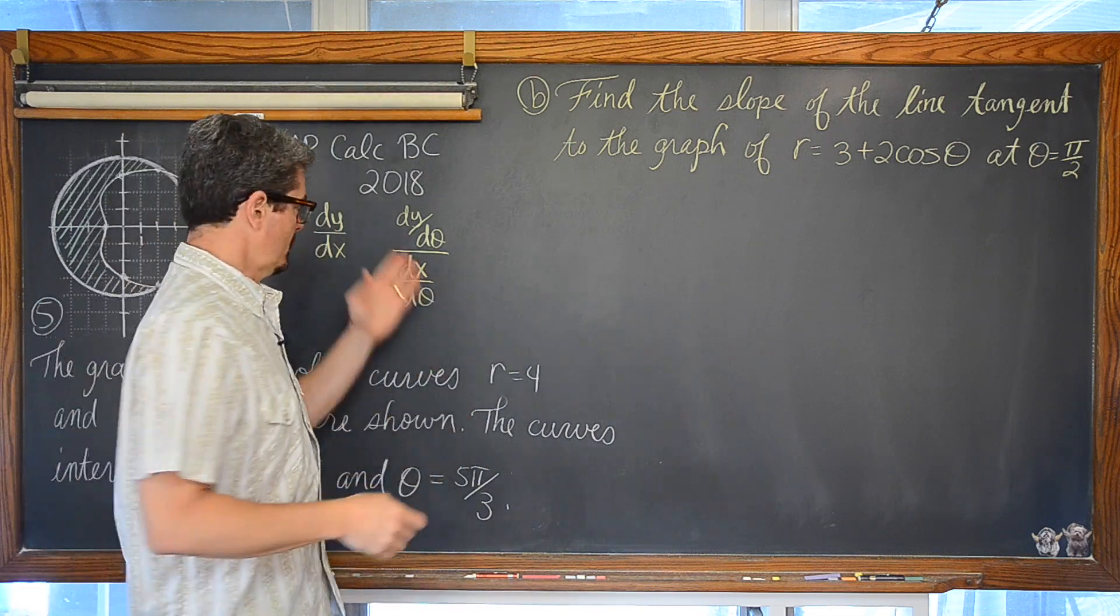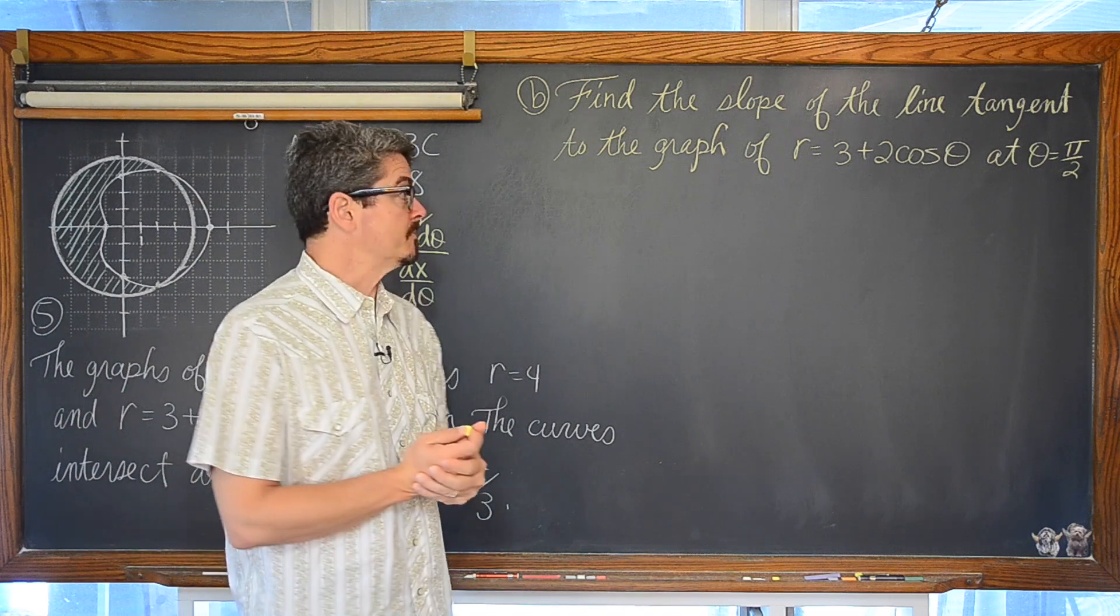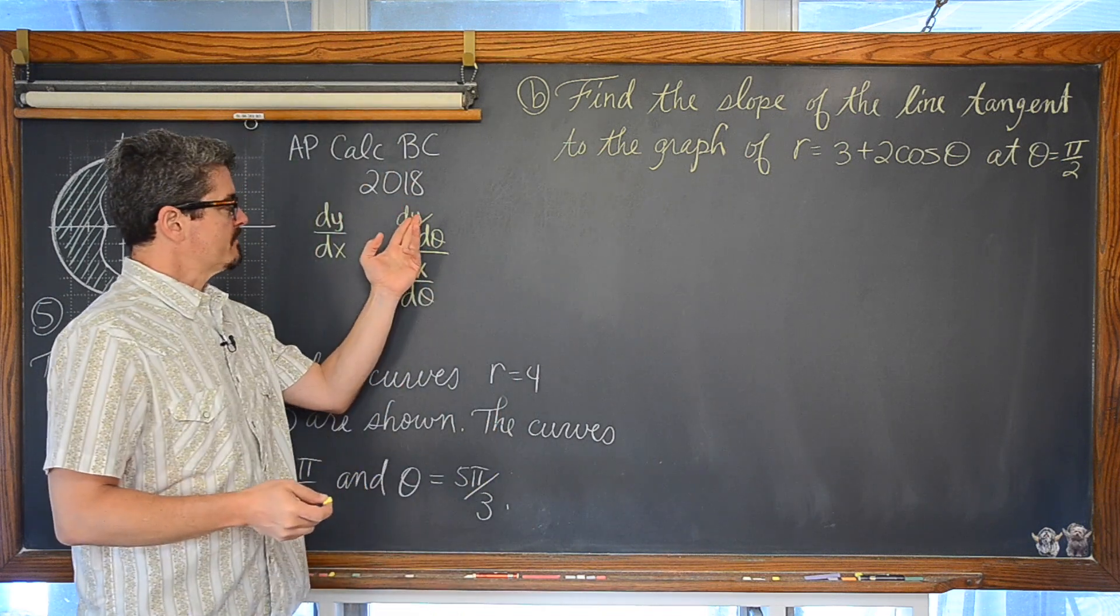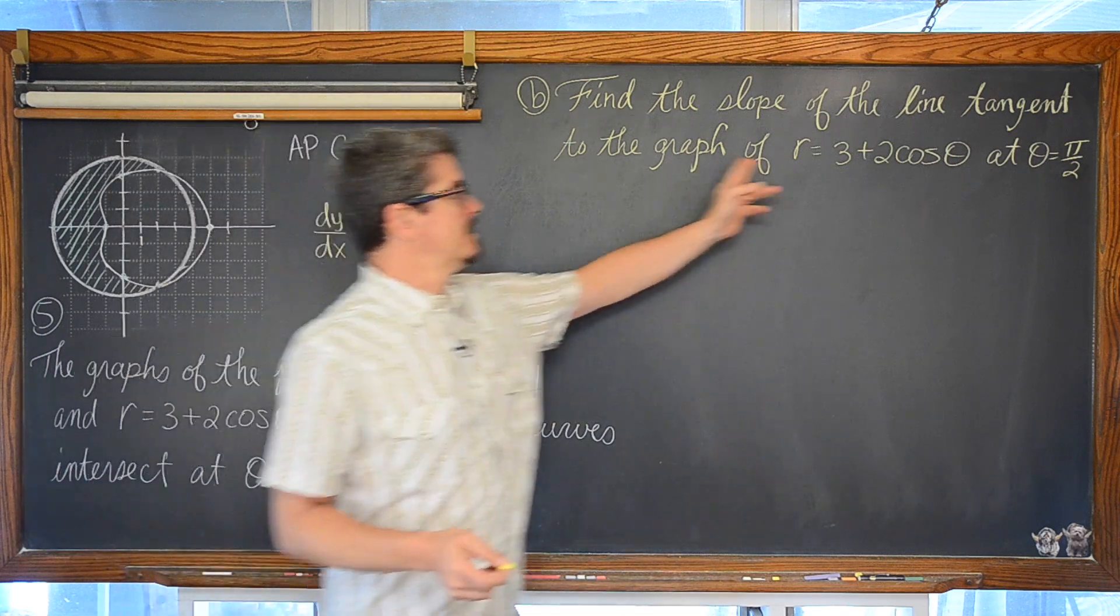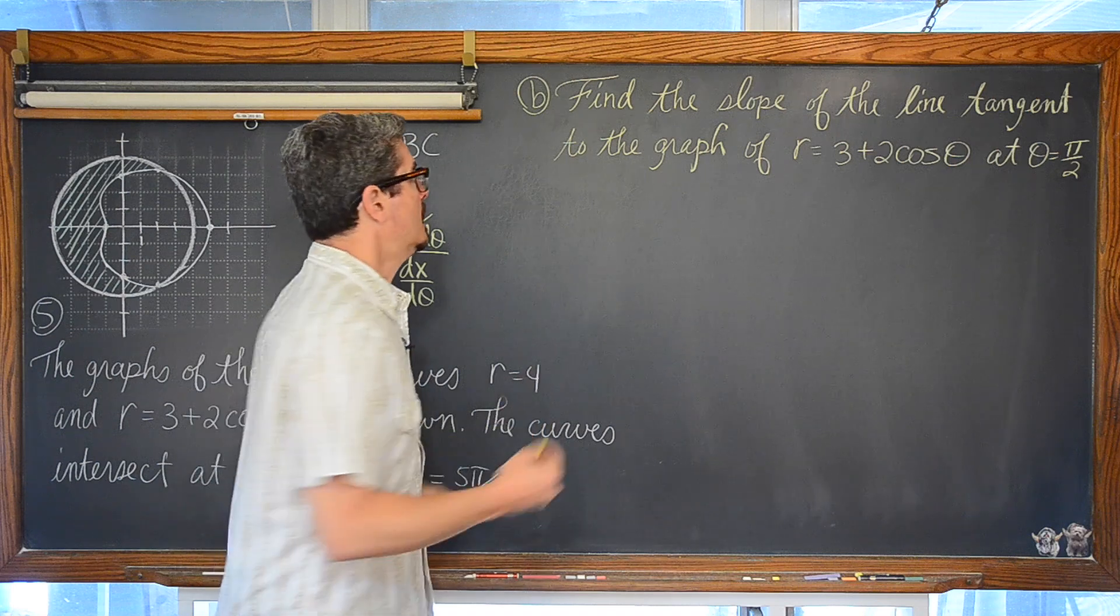Our derivative is still going to be in terms of theta even though we don't see that theta notation in the derivative notation. How are we going to get an equation for y and an equation for x out of r equals 3 plus 2 cosine of theta?